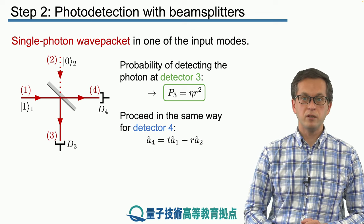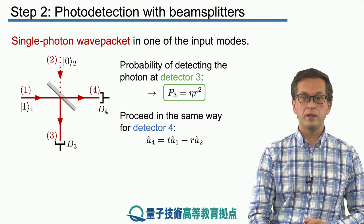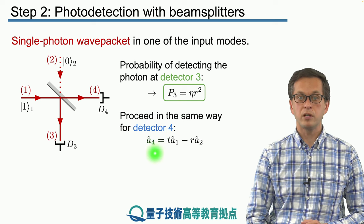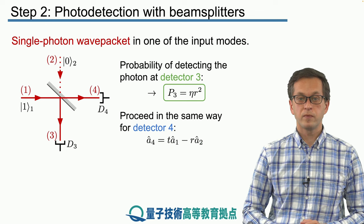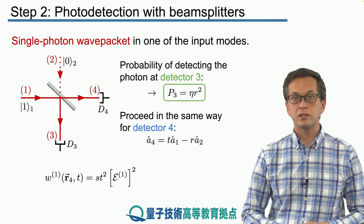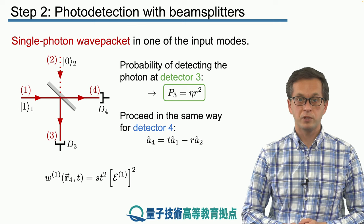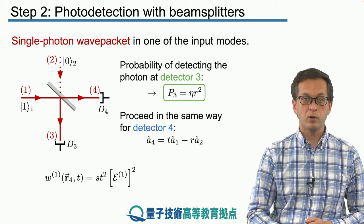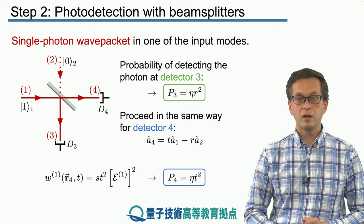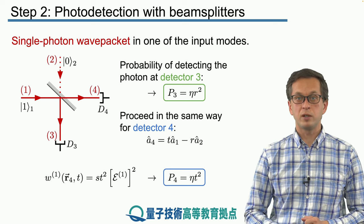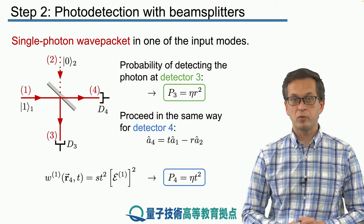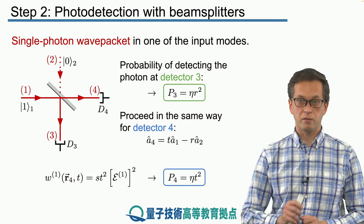And we can do the same thing for our detector 4. But this time we have to substitute for A4 in terms of A1 and A2. And we use the same input state. And what we get is the photodetection signal W1 at position R4 is equal to S times T squared times the one photon amplitude squared, which we can write as the total probability being eta, the quantum efficiency of the detector, times the probability that the photon is transmitted through the beam splitter.